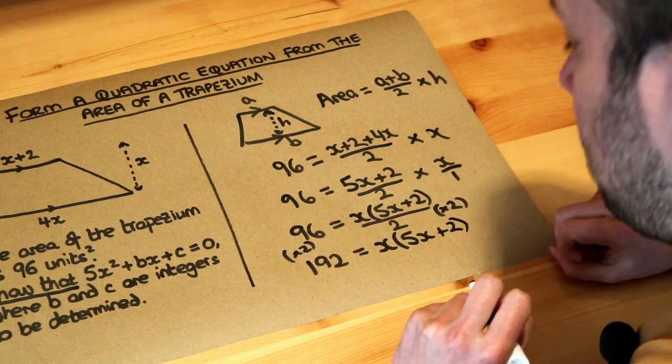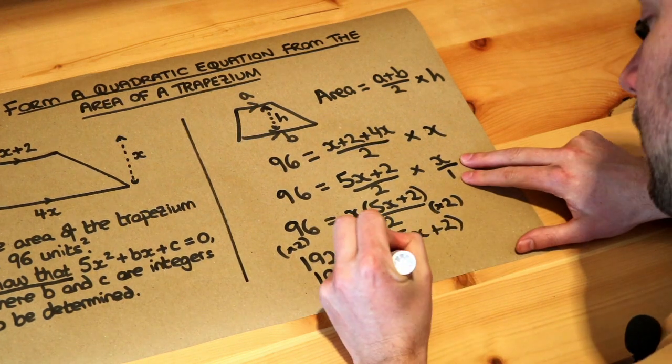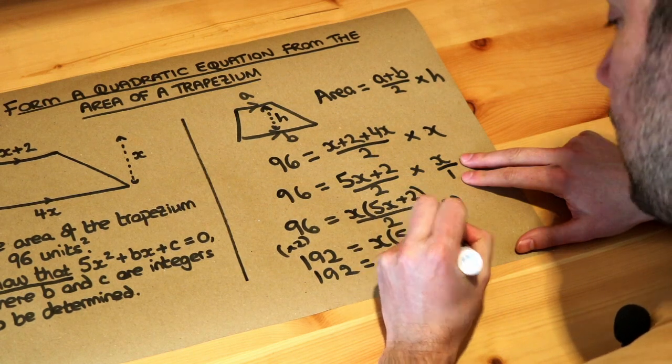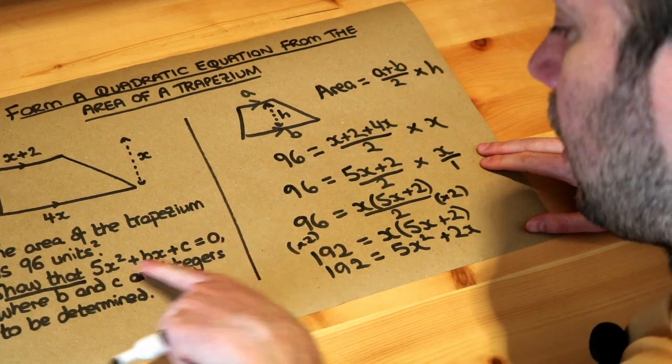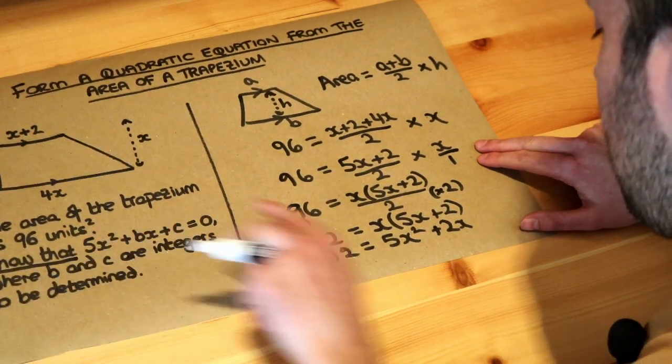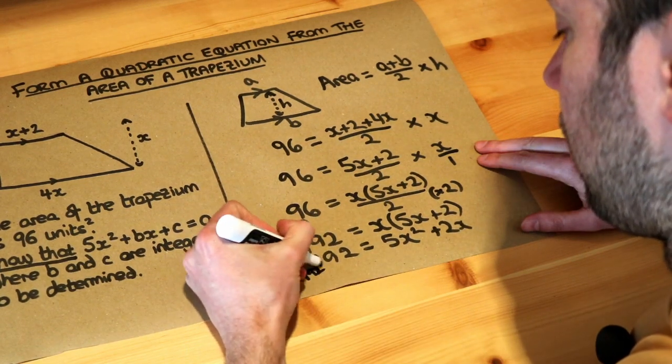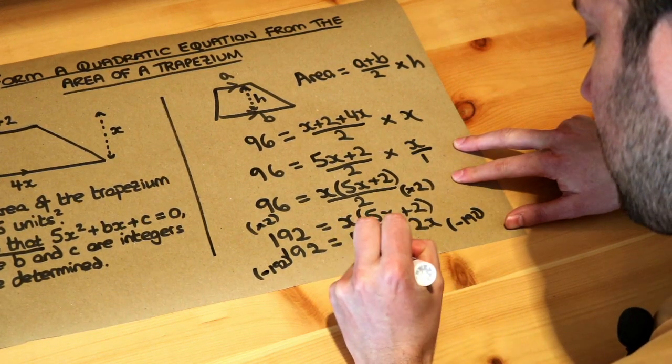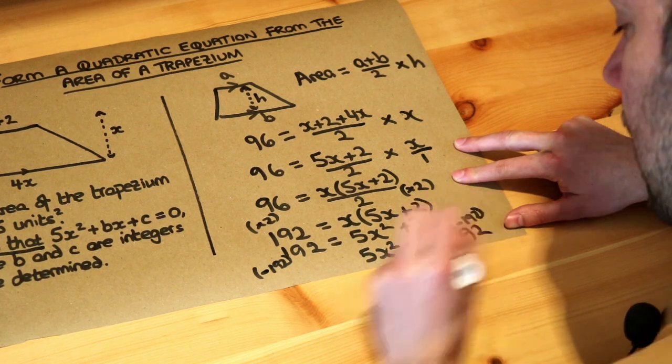And we're getting very warm now, so we just need to expand this bracket. You do x times 5x, which is 5x squared, and we do x times 2, which is 2x. Let's look at the form we want to get it in: we want 5x squared plus something x plus something equals 0. The 5x squared is already positive on this side, but we want 0 on the other side of the equation, so we don't want that 192. I'm just going to minus 192 from both sides, so we get 0 on one side. That's going to give us 5x squared plus 2x minus 192 equals 0.